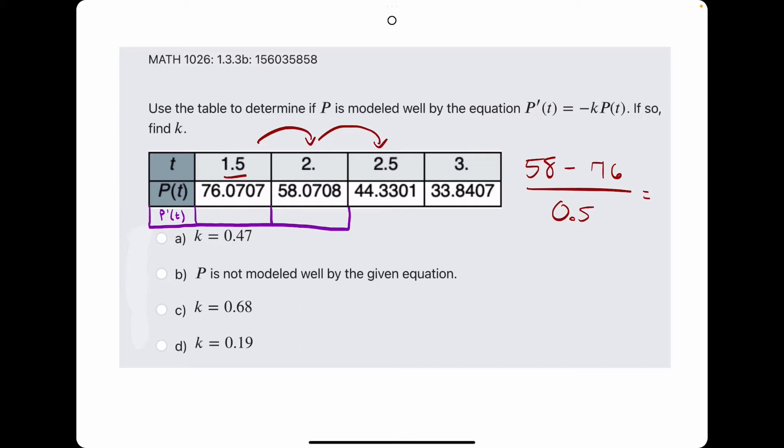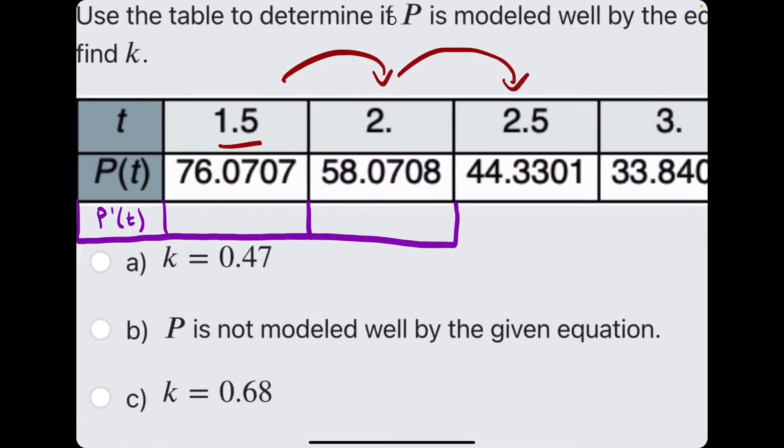So 58.0708 minus 76.0707. So that gives us the change in p if we were increasing by one whole t value, but we're only increasing by half a t value. So what we do is divide by 0.5 and we get negative 35.9998.